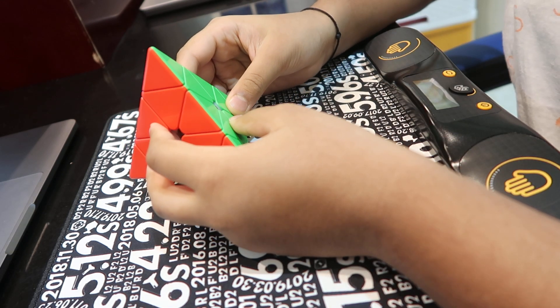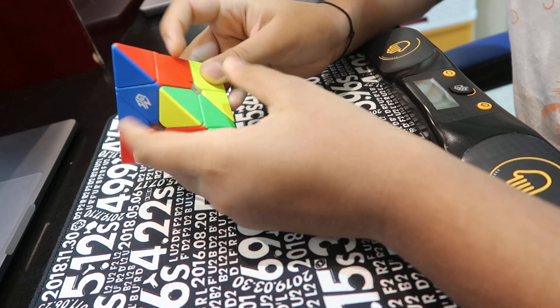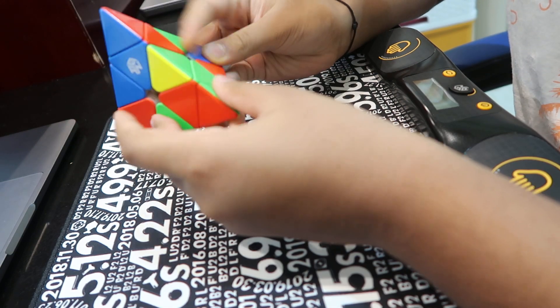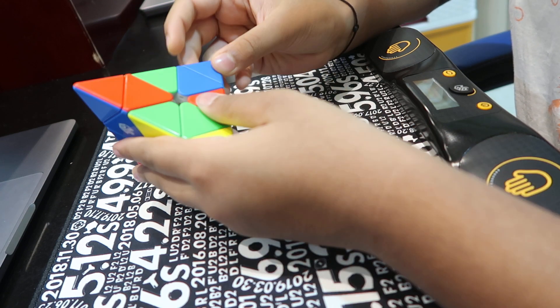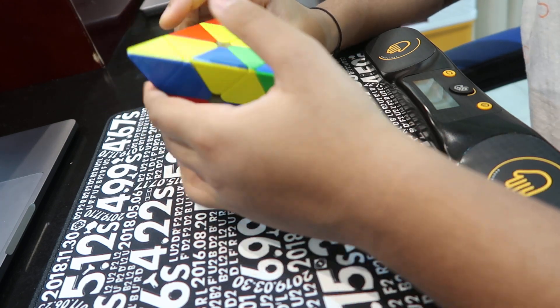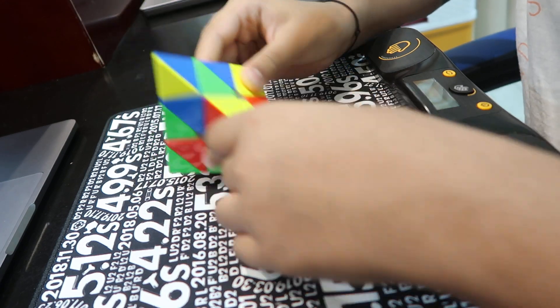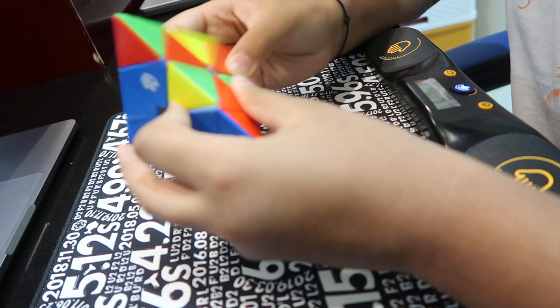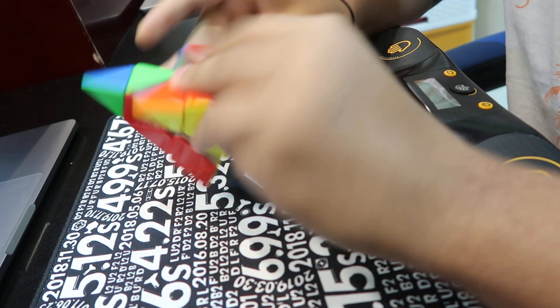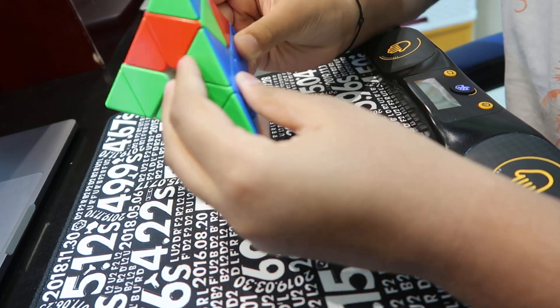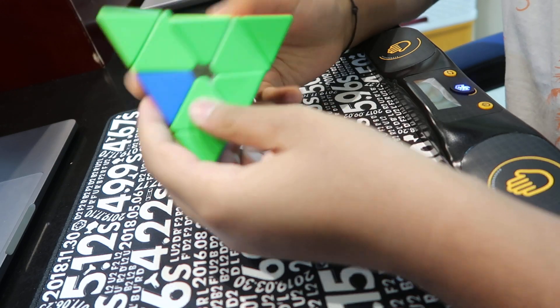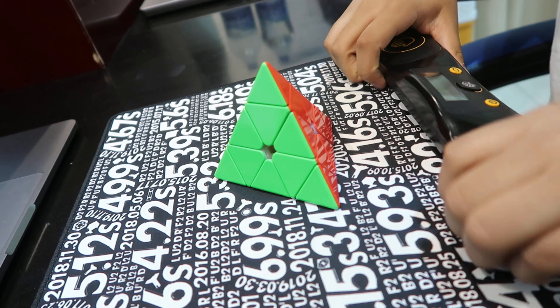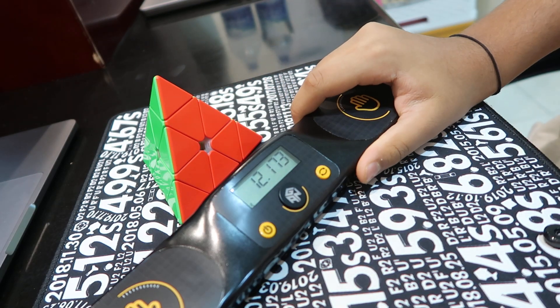Okay, we'll be doing the average of five for Pyraminx today, hoping to get a better time. First solve: 12.173.